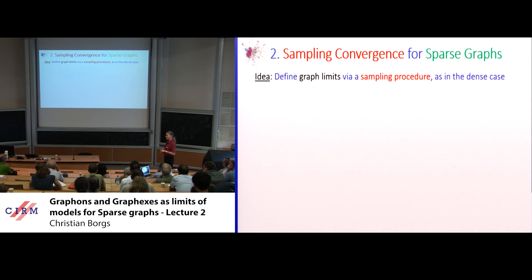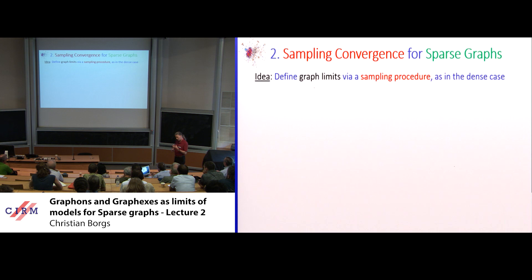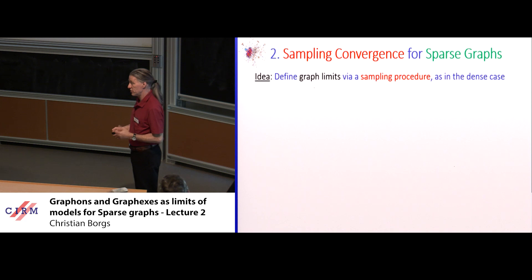Now we would like to do the same thing for sparse graphs. If graphs have bounded degree or bounded average degree, that leads naturally to Benjamini-Schramm convergence — but that's not what I'll do. I want to talk about graphs where the average degree diverges. The key idea: to define a limit, find a sampling procedure that accesses the huge object and returns a small object. Depending on the sampling procedure, you get various different notions of limits.